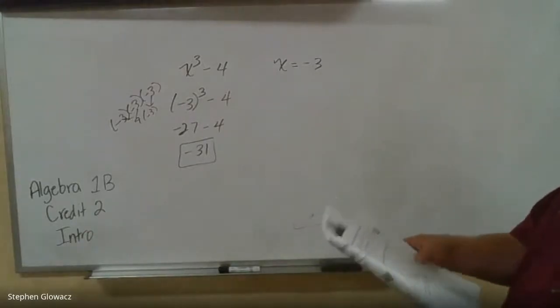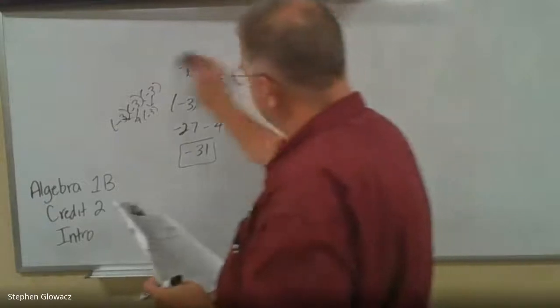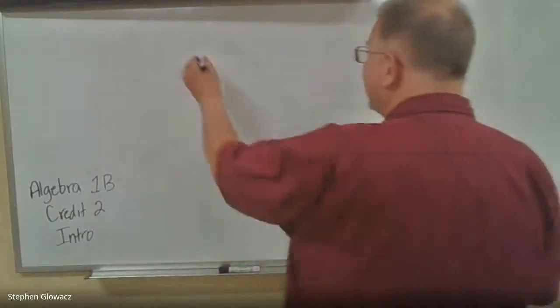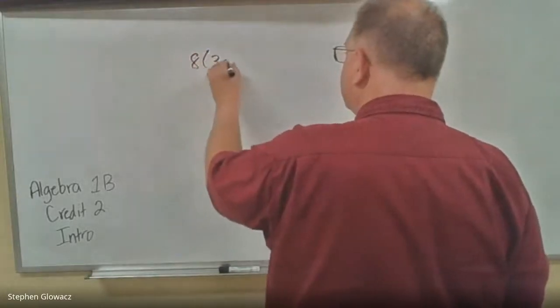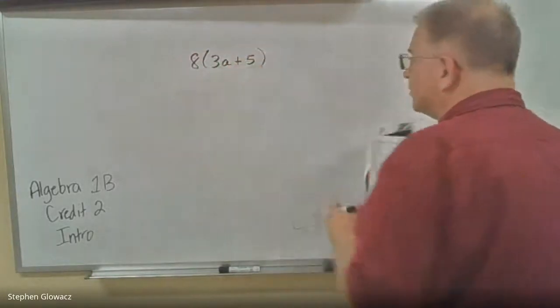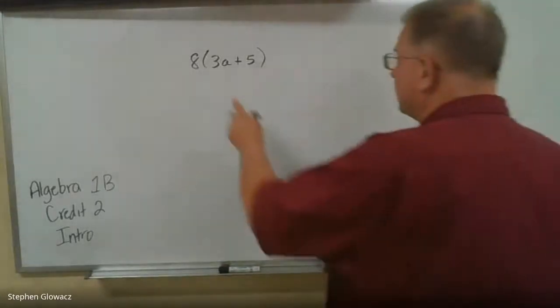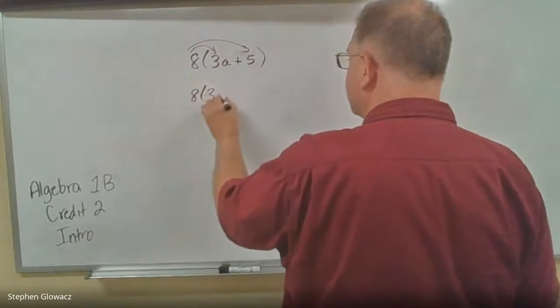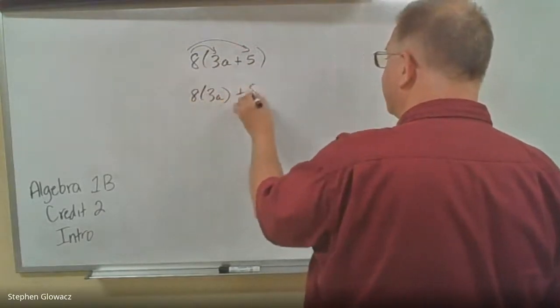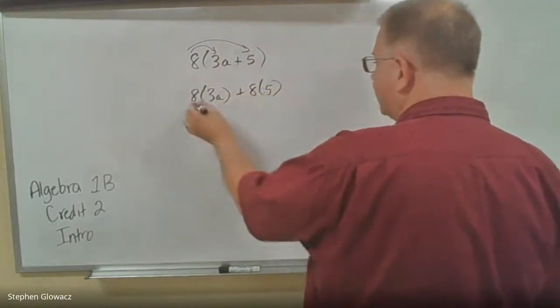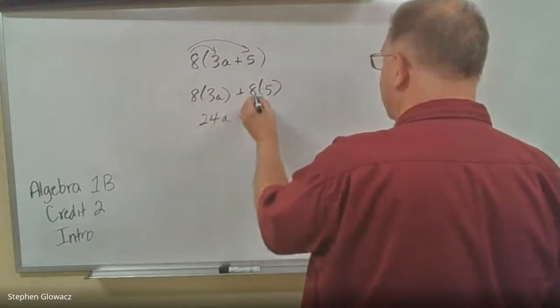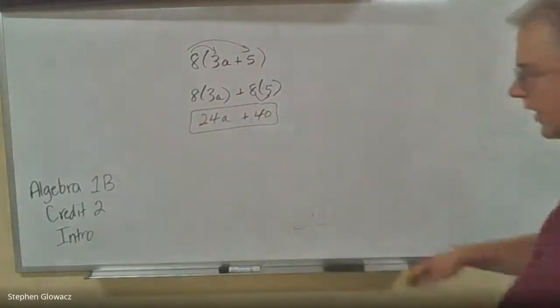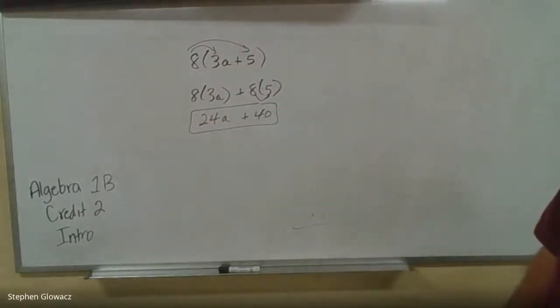Over on page 7, we're going to go over the distributive property, just a few quick examples, a few quick reminders. Number 4, we have 8 times 3A plus 5. So remember, when you do the distributive property, you have to multiply what's outside to everything that's inside. So we have 8 times 3A and then 8 times 5. 8 times 3 is 24, so 24A. 8 times 5 is 40. So 24A plus 40. That is number 4.